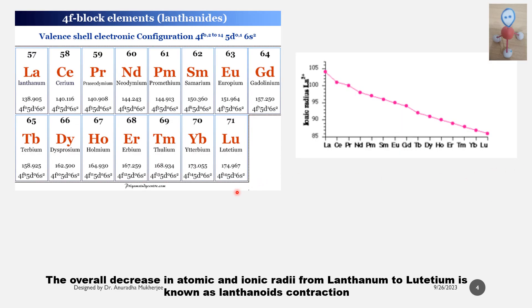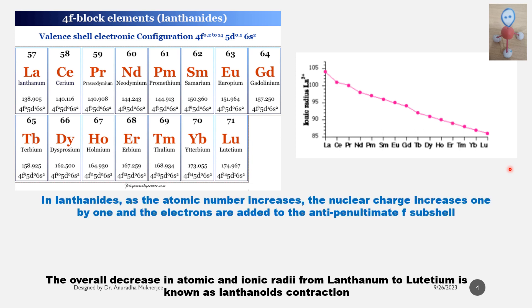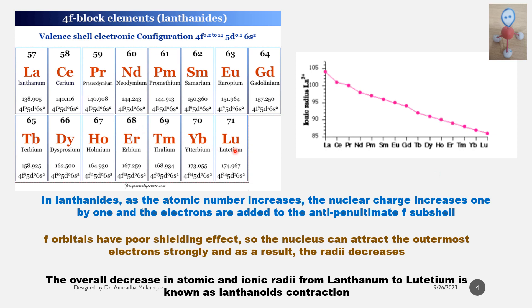In the lanthanide series, the electrons started to fill in f orbital. From cerium to lutetium, electrons get filled and a total of 14 electrons fill in the 4f orbital. So as the atomic number is increasing, the nuclear charge is increasing one by one and electrons are getting added in the 4f subshell.